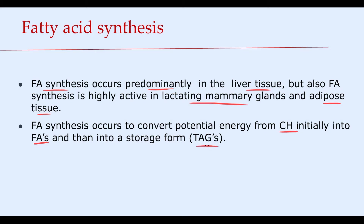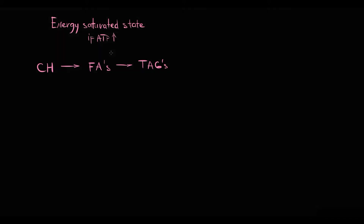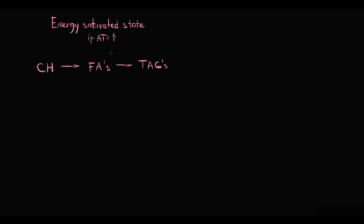The major idea of fatty acid synthesis is that in an energy-saturated state, when tissue ATP stores are full, tissues do not require additional energy. It is much wiser for the tissue to prepare some energy reserves for hard times, such as during starvation. We have two major storage materials: glycogen and triacylglycerols.